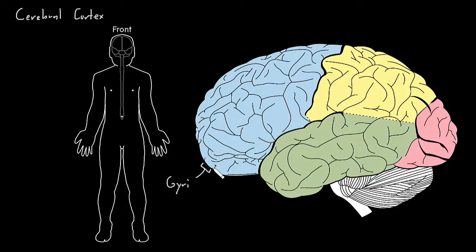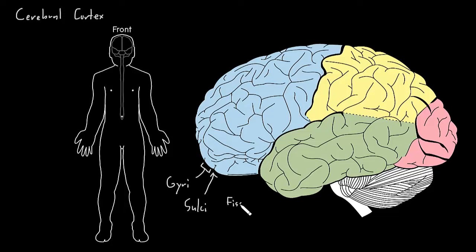These small grooves on either side of a gyrus are called sulci — that's the plural. A single one is called a sulcus. And there are also some really large grooves, like this one right here, and those large grooves we usually call fissures.